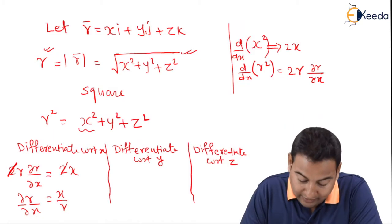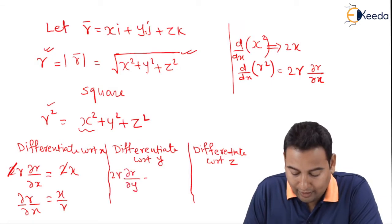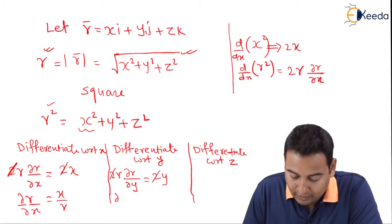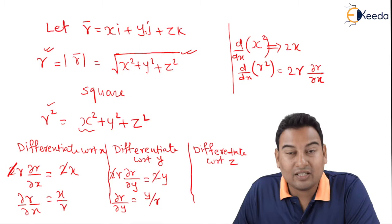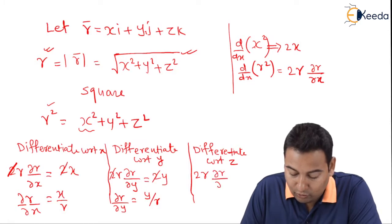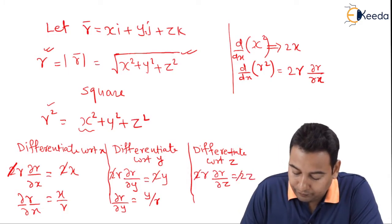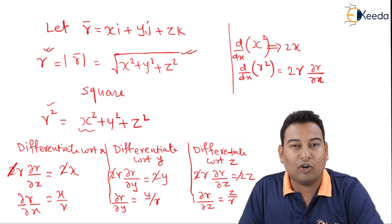Differentiating with respect to y: the left side gives 2r·(∂r/∂y); on the right, x² gives 0, y² gives 2y, z² gives 0. So ∂r/∂y = y/r. Differentiating with respect to z similarly: 2r·(∂r/∂z) = 2z, so ∂r/∂z = z/r. Remember these three results — they are very important.